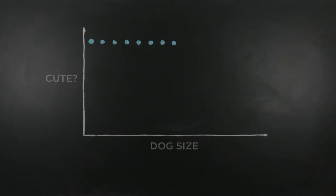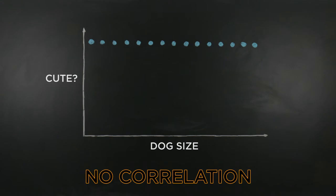Note that a graph like this also shows non-correlation. As you can see, regardless of size, dogs are always very cute. Since the dog size has no correlation with how cute they are, we can't use dog size to predict dog cuteness.